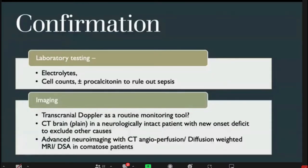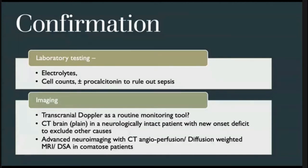Once vasospasm is suspected, other causes should be ruled out, such as hyponatremia, hypoglycemia, and sepsis via counts and procalcitonin. Transcranial Doppler has emerged as a routine monitoring tool for bedside evaluation of vasospasm and should be routinely done in all SAH starting from day one. If a patient develops a new neurological deficit, a plain CT brain should be done to exclude other causes like hydrocephalus or new infarct, and advanced imaging such as CT perfusion, diffusion-weighted MRI, or DSA can be performed.